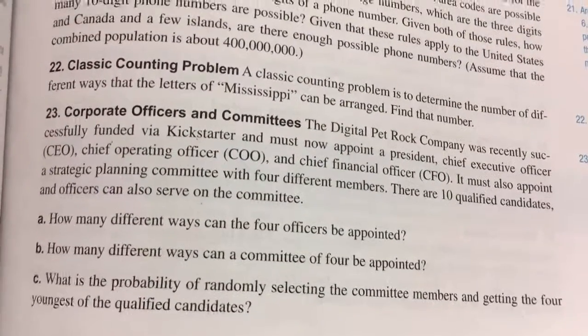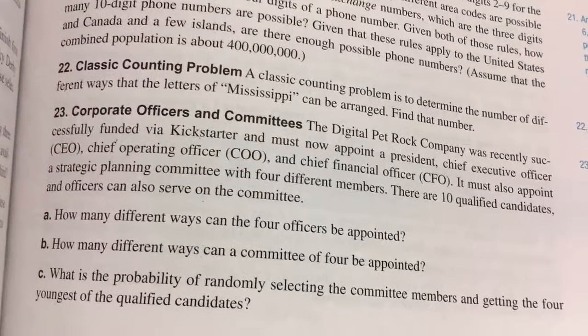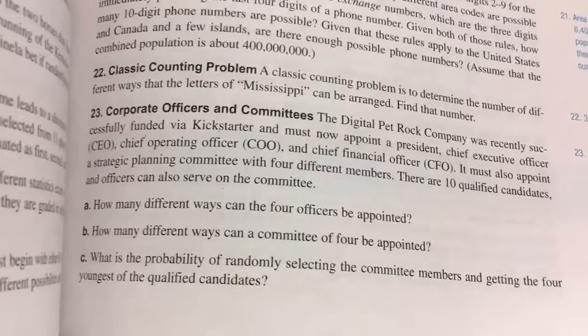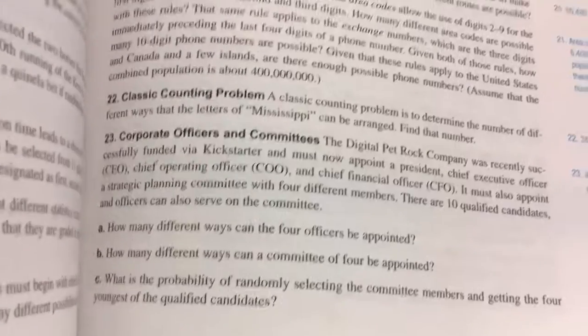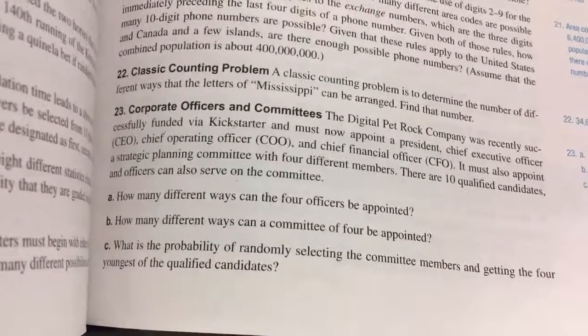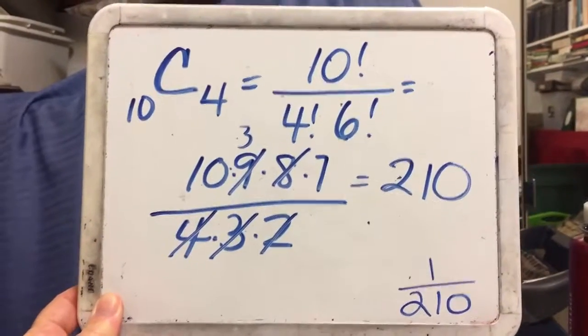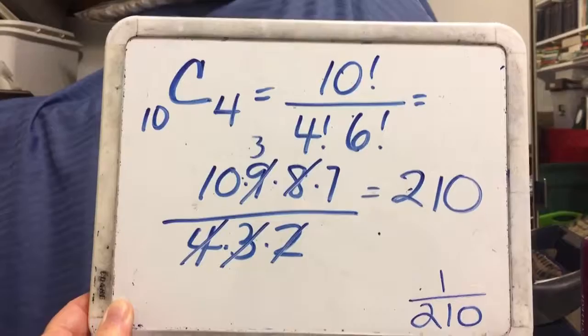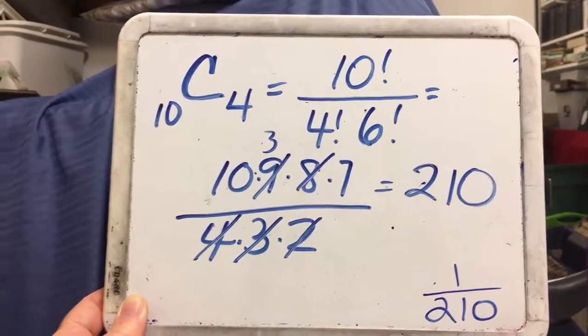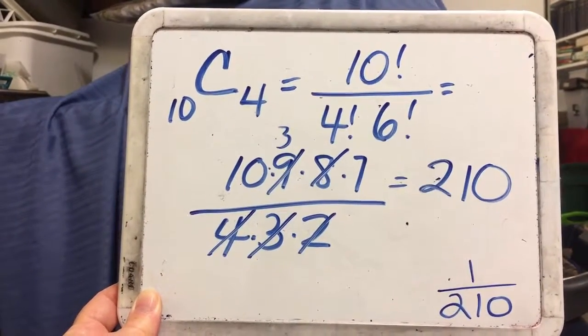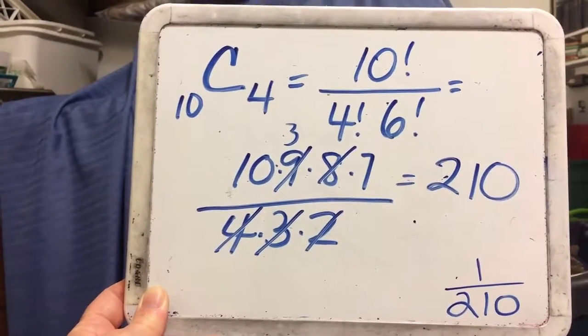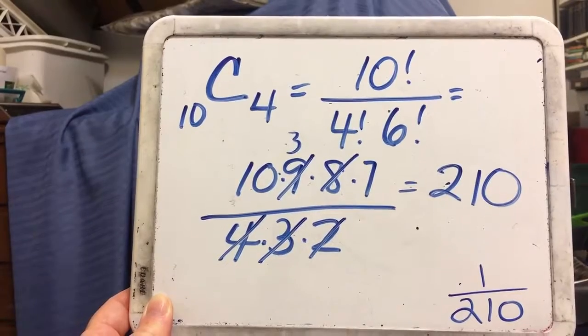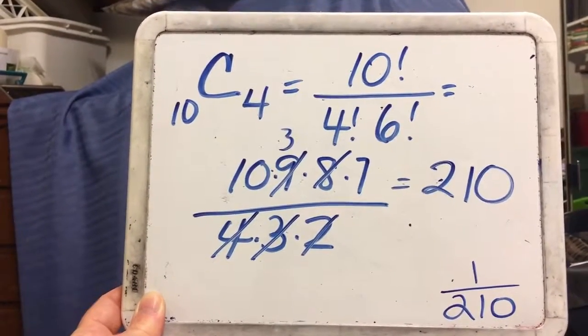The second portion says, how many different ways can a committee of four be appointed? Now, this is a committee. Remember, combinations, committee, because order does not matter which order you get on the committee. Since the officers can be reused for the committee, we're going to have 10 things chosen four at a time for a committee. A combination has two things on the bottom. So 10 factorial over 4 factorial, 6 factorial. The denominator factorials add together to give the 10. So the 6 factorial cancels, and we end up with 10, 9, 8, 7, multiply it all together. On the bottom, we've got a 4, 3, 2. And we wind up canceling the 8 from the top and the bottom, and a 3 from the top and the bottom, and we end up with 210. So 210 is the B answer, and that is correct.